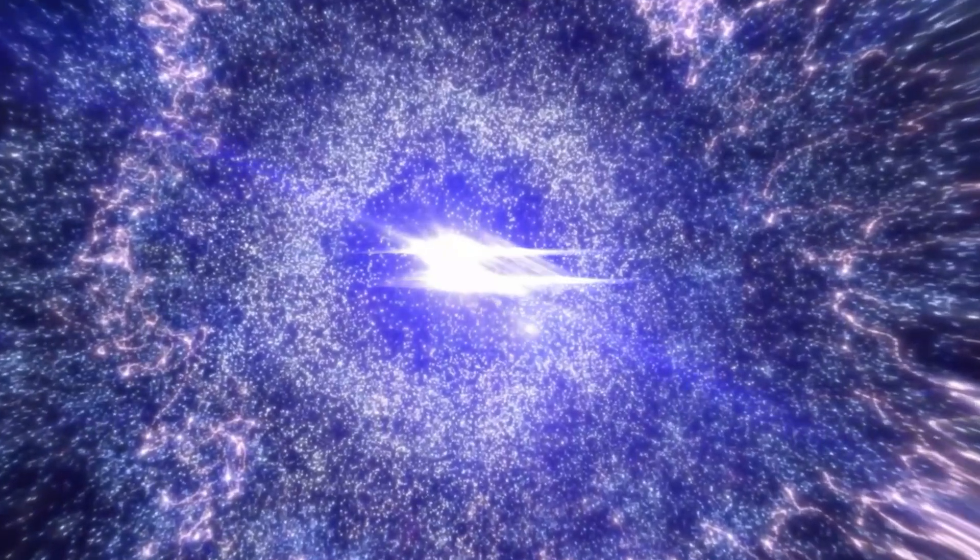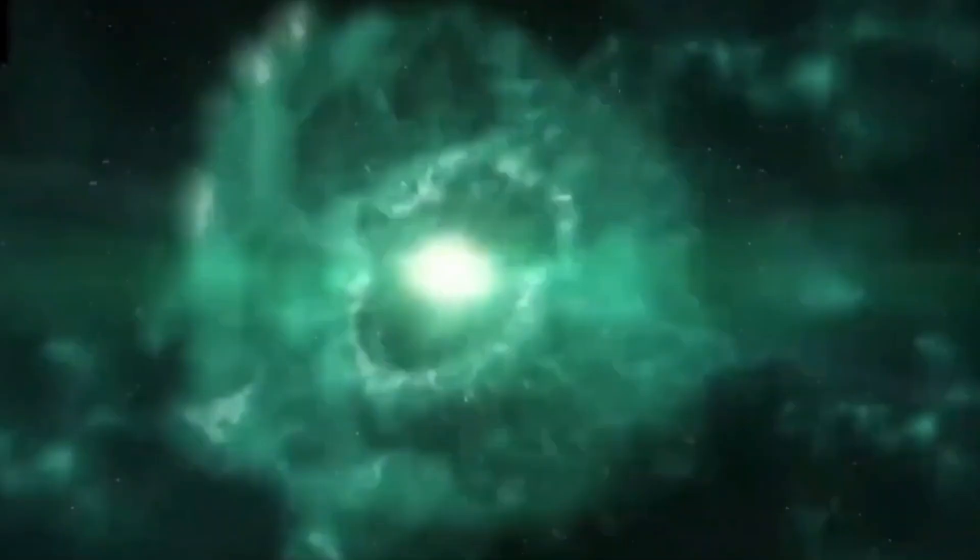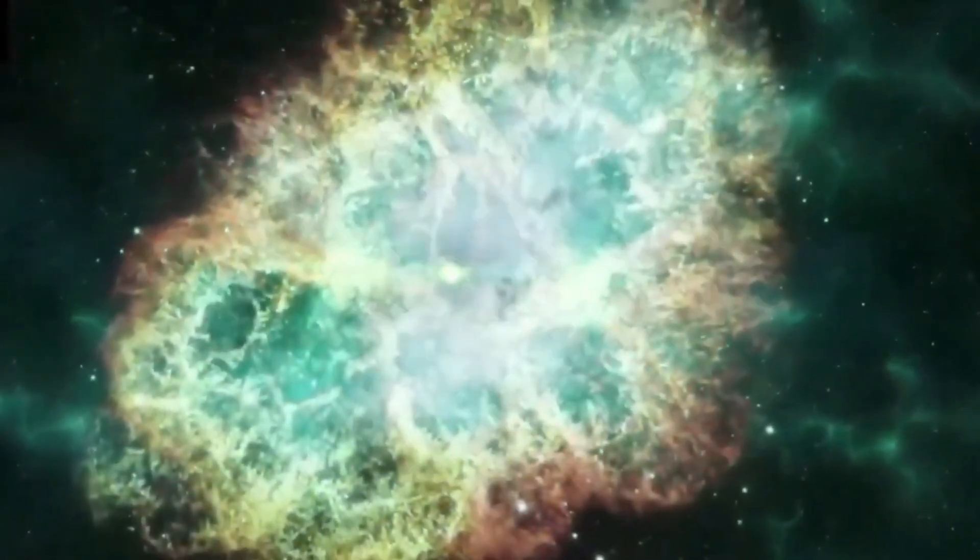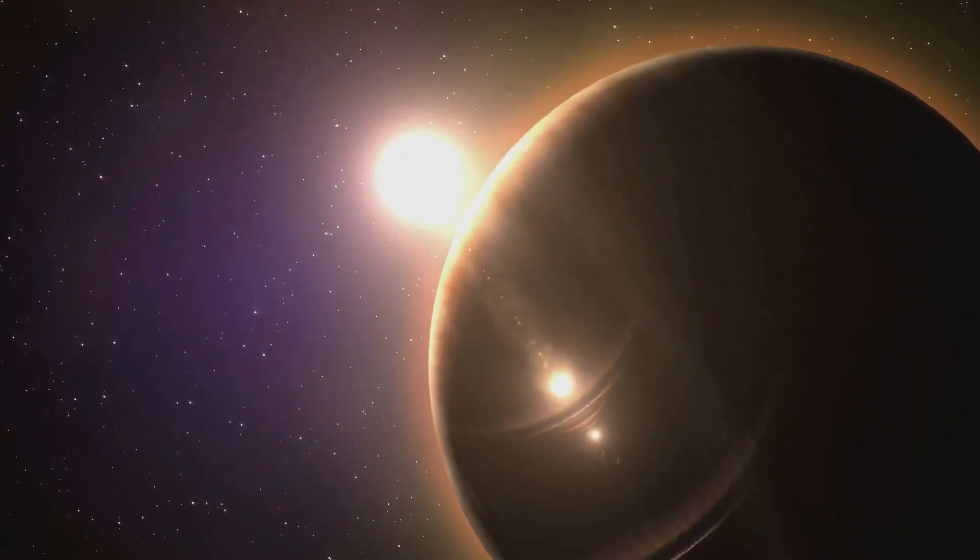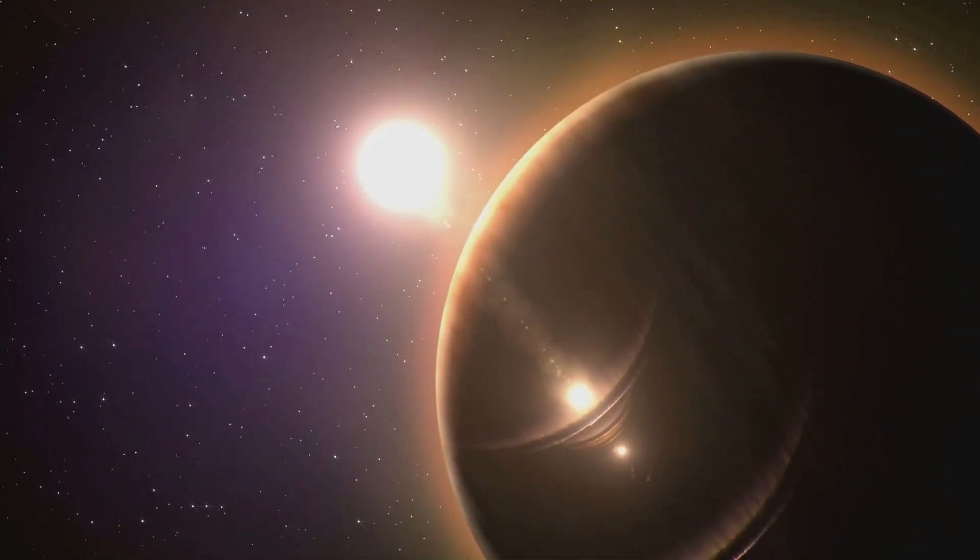Gamma rays are one type of energy that supernovae give off. Gamma ray bursts, or GRBs, are very energetic releases that can happen during some supernovae. A GRB would have to be pointed right at Earth though, for it to have a big effect on our planet. The chances of a direct hit from Betelgeuse's supernova are very small.